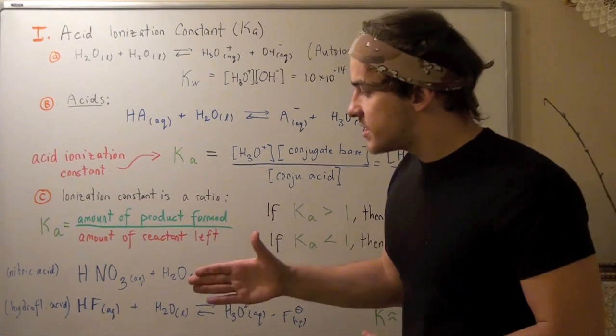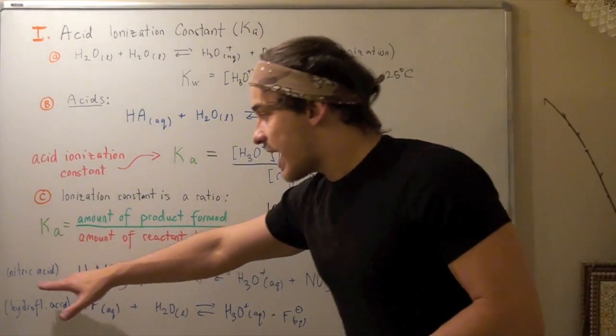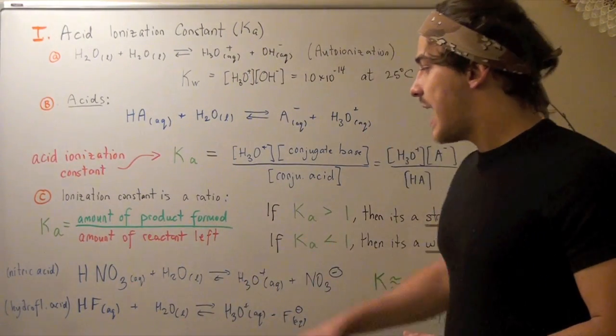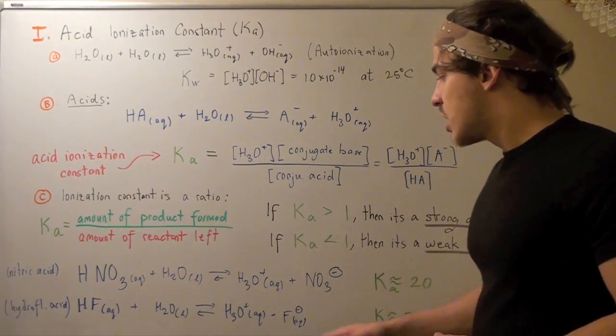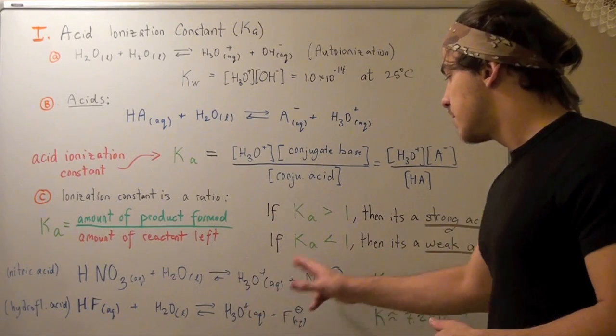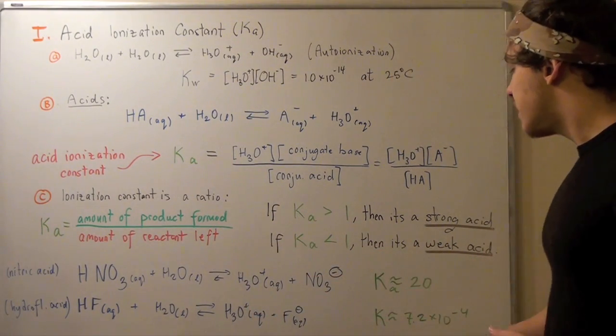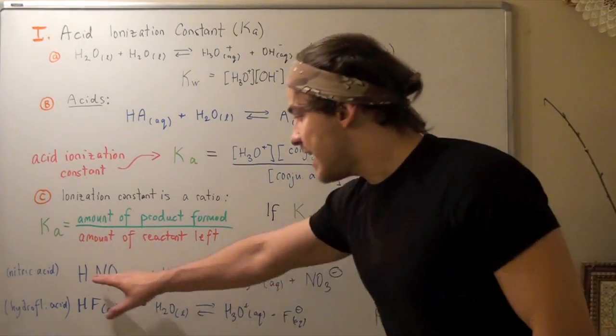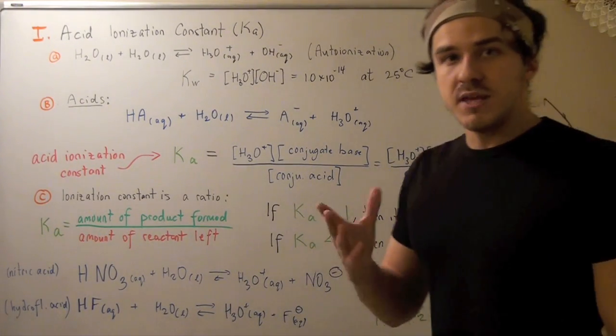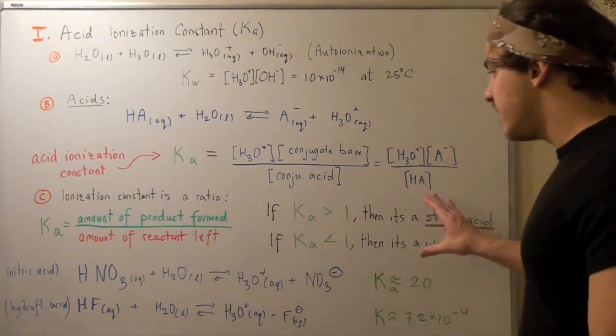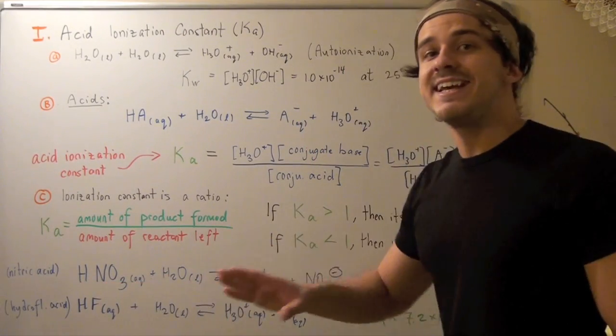Now let's look at a few examples. Nitric acid in aqueous state reacts with water to produce hydronium ion plus nitrate ion. The Ka for this acid is 20, and that means it's a very good acid, and indeed it is.